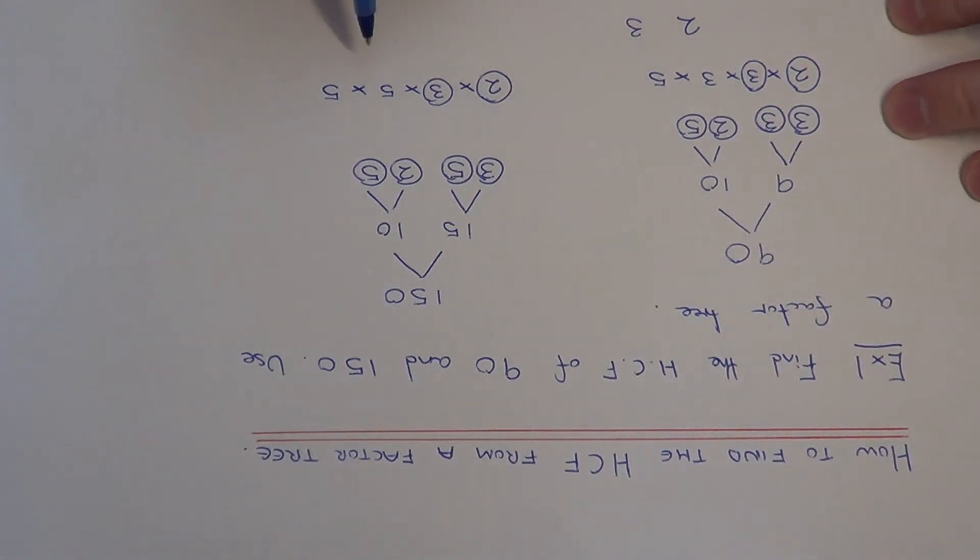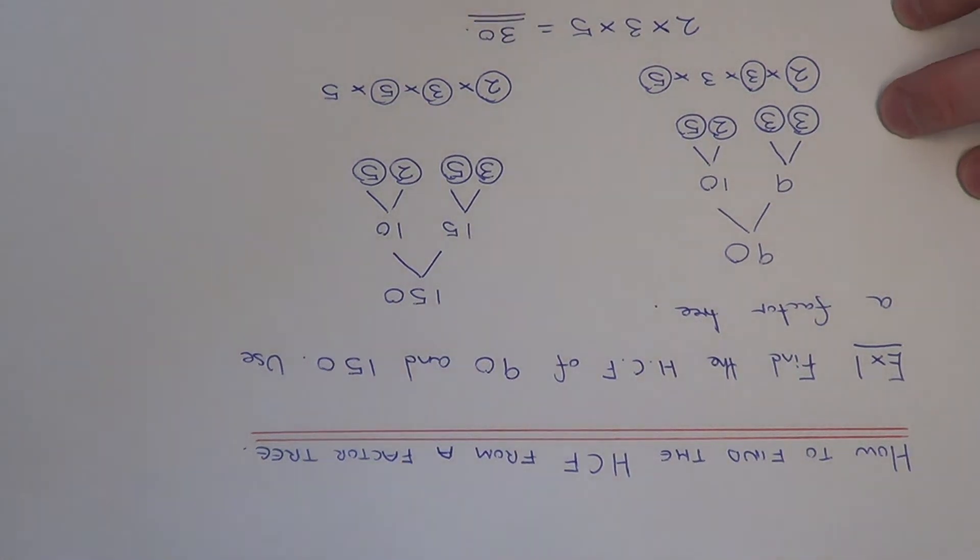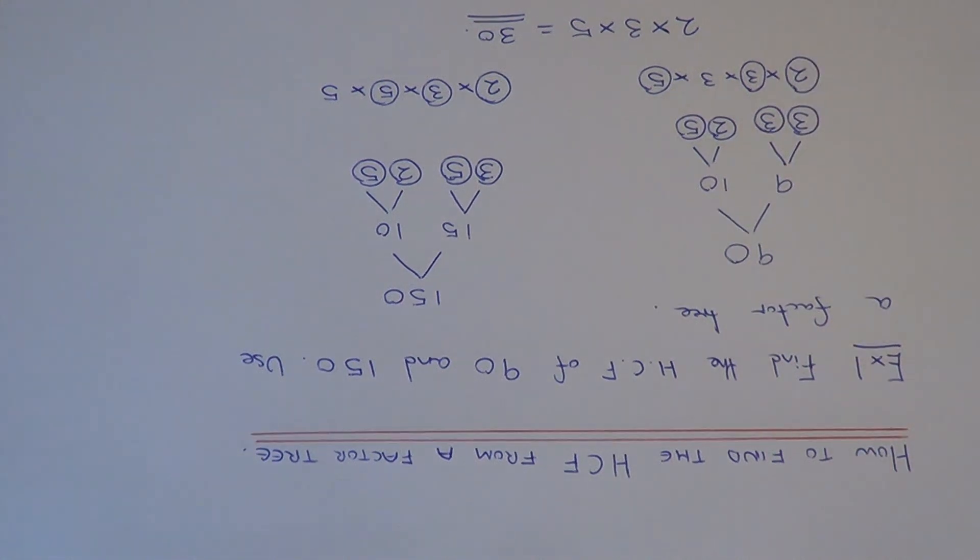What else have we got the same? We've got a 5 and we've got a 5 over here. So there's nothing else to pair up. We just need to multiply these common factors together. 2 times 3 is 6, times 5 is 30. So our highest common factor of 90 and 150 is 30.